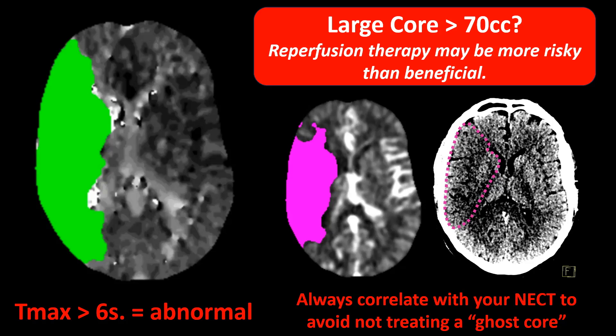A ghost core does not necessarily correspond to irreversibly infarcted tissue. If you already see signs of infarction on non-enhanced CT, a ghost core is very unlikely. However, if you don't see those signs and a patient has a very large core, you should really consider the possibility of a ghost core — because if you treat it as a real core, you might withhold a potentially beneficial treatment from a patient who would have benefited from it. Always correlate with non-enhanced CT.